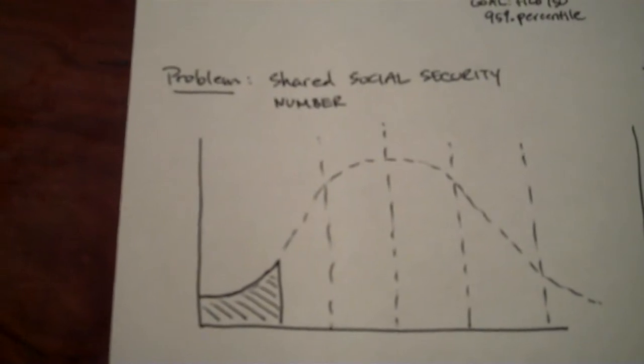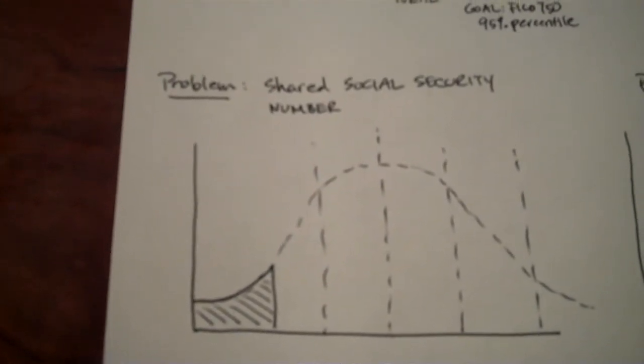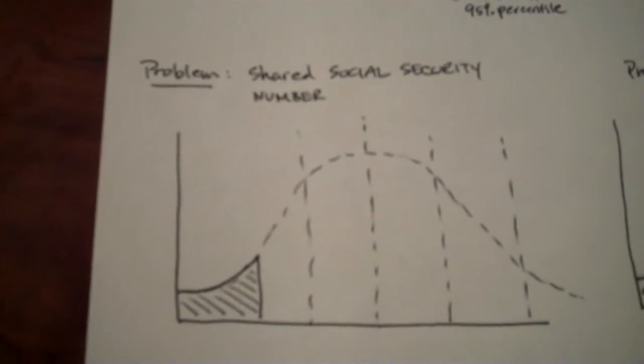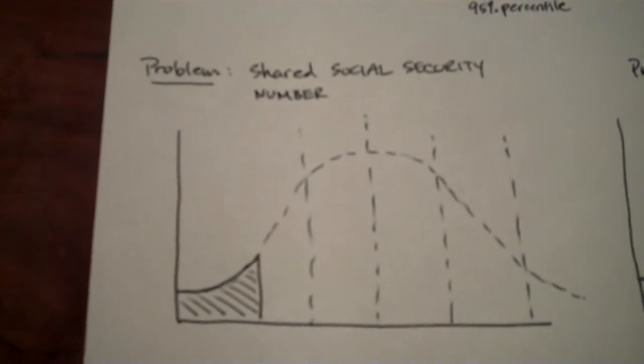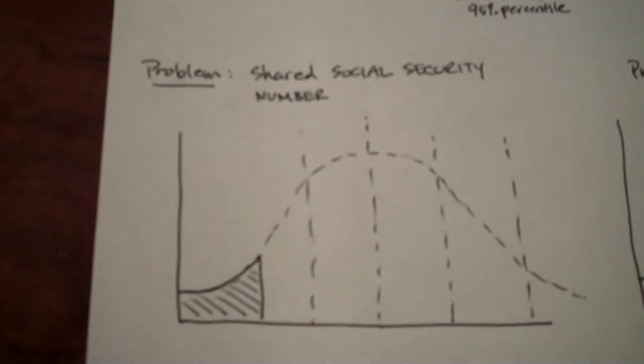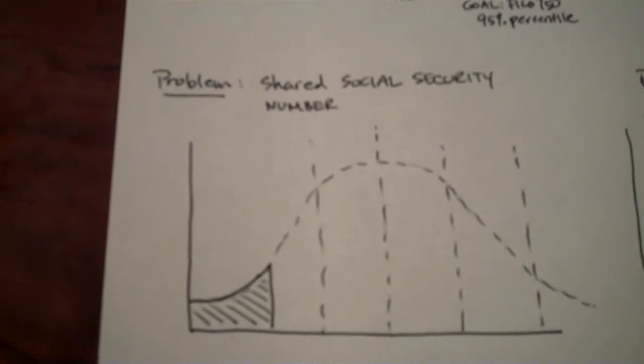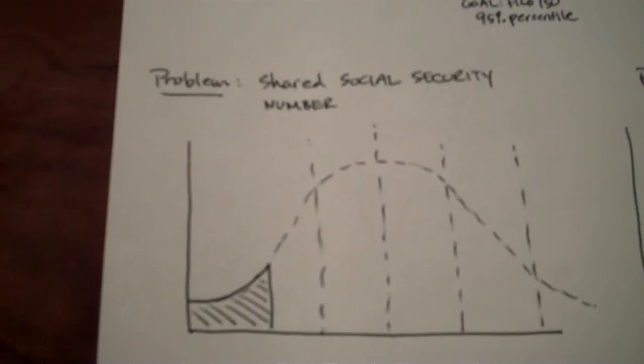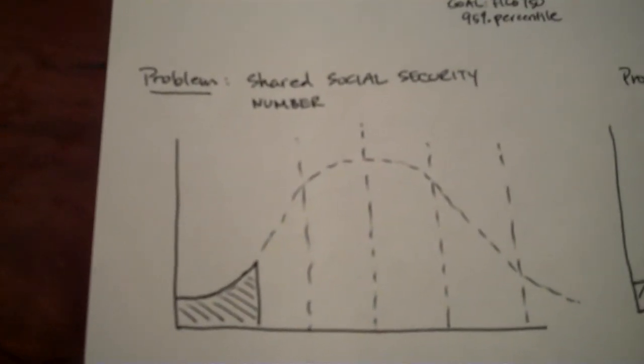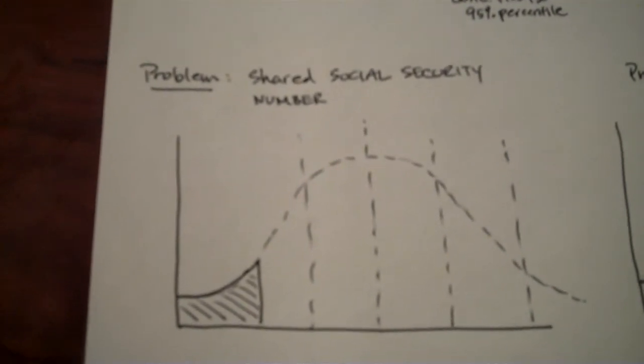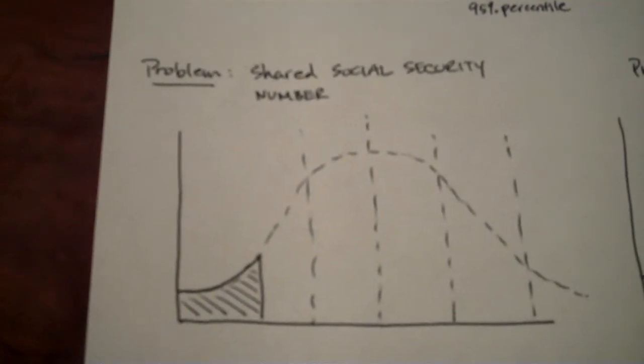The way to solve this is you want to have a credit card in your own name, in your own Social Security number. The biggest mistake that college students make is they see a credit card with their name on it on the front, but on the back end, there's two Social Security numbers attached. You want to be paying a credit card with one Social Security number, your own Social Security number.